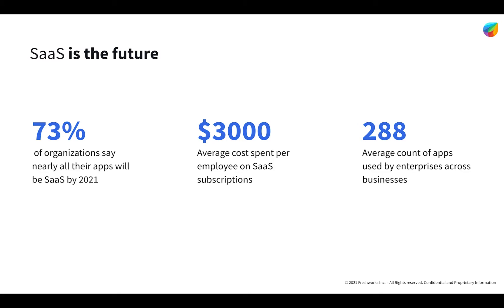About 288 apps on average are used by enterprises to solve their business problems. This is about the present. A projection about the future is that about 73% of organizations say nearly all their apps will be SaaS by 2021. All this clearly points that digital transformation is pacing up and with the remote wave taking over, switching to SaaS solutions is inevitable.